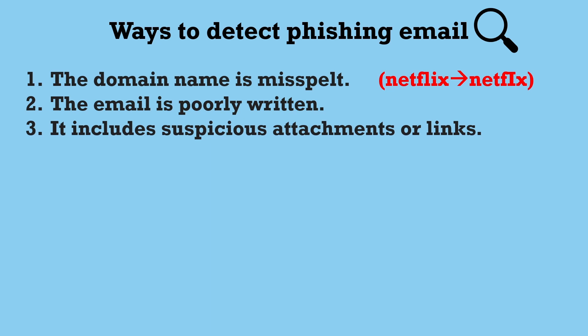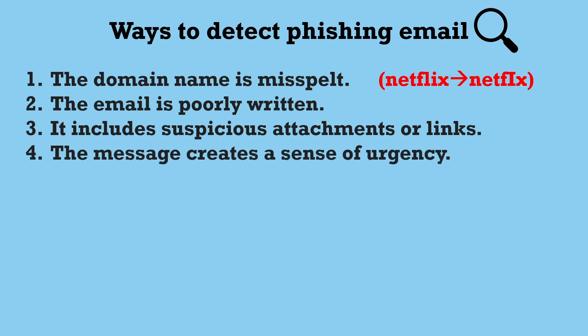Number three is it includes suspicious attachments or links. In this case, what you will do is just hover over the link — do not click the link — just hover over the link and see the address. And if you know the sender of the email or you see that the link is safe, then after that you can go ahead. Number four is the message creates a sense of urgency. The attacker will create some kind of urgency or fear. The email will trigger emotions like fear or urgency, like 'we have blocked your account' or 'you have only one day to fill up this form.'